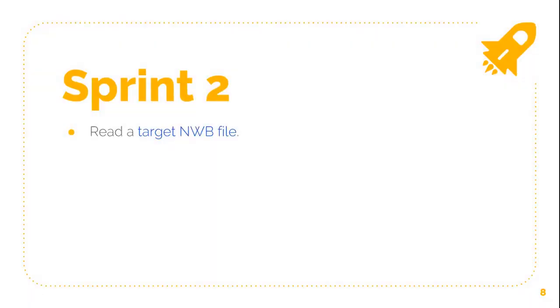Sprint Two was trickier than you might think. While doing this task, we found out that there were some compatibility issues between the target file and the most recent PyNWB version at the time. The data in that file was no longer viable, so we had to change to another file, kindly provided by Nicholas from the Allen Institute, and readapt some of my future tasks.